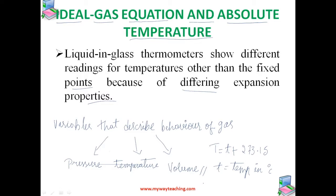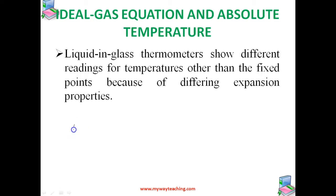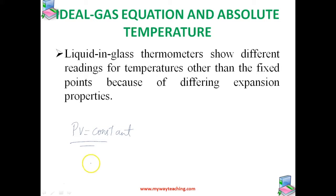When temperature is held constant, the pressure and volume of a quantity of gas are related such that PV = constant. If one increases, the other decreases in order to maintain this relation. This relationship is known as Boyle's Law.